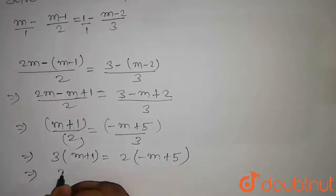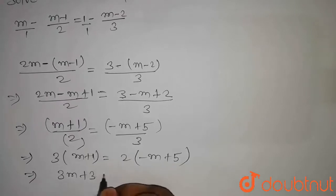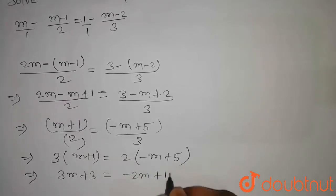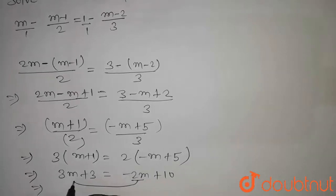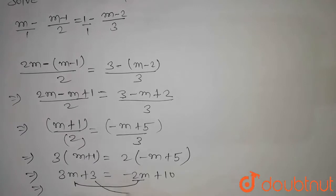This will be equal to 3m plus 3 equal to minus 2m plus 10. Now we will bring minus 2m to this side and 3 to this side.